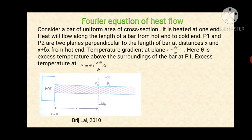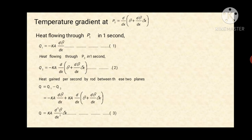Now the temperature gradient at plane P1 is given by dθ/dx. Temperature gradient means change in temperature with respect to distance. Here θ is the excess temperature above the surrounding of the bar at P1. The excess temperature at plane P2 is given by θ plus (dθ/dx)·Δx. The temperature gradient at plane P2 is equal to d/dx of [θ + (dθ/dx)·Δx].